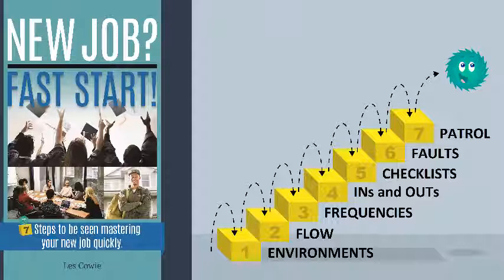So if you look at the job from these seven points of view: one, environments; two, flow; three, frequency; four, ins and outs; five, checklists; six, faults; and seven, your patrol pattern and inspection sequence, you should quickly learn how to be successful in that job.